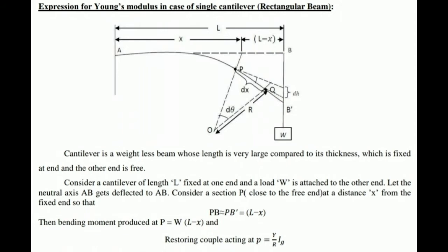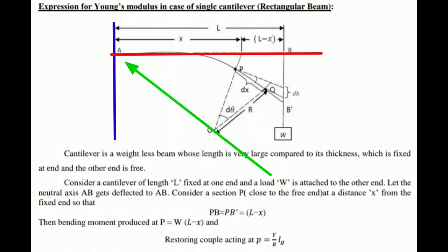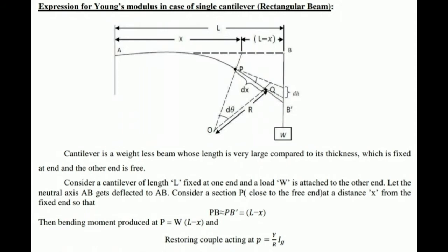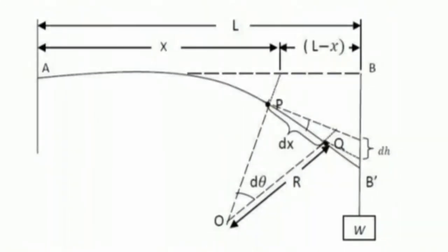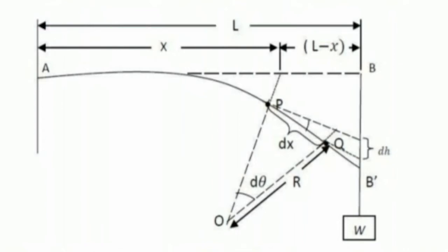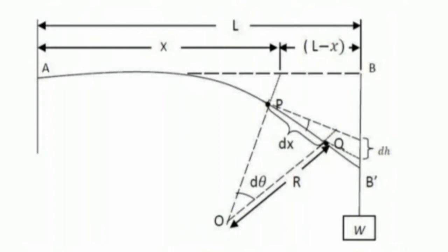A cantilever means the beam whose one end is fixed to the support and the other end is free to move. In this derivation we use the same cantilever where the weight of the beam is negligible compared to the attached load, the length is larger compared to its thickness, and the beam is fixed at one end with the other end free.